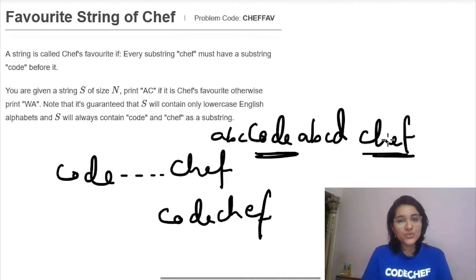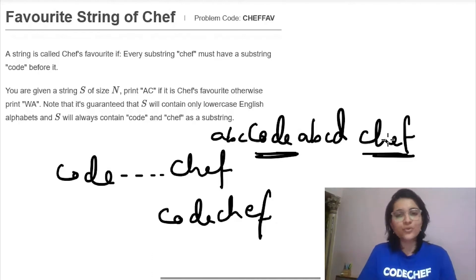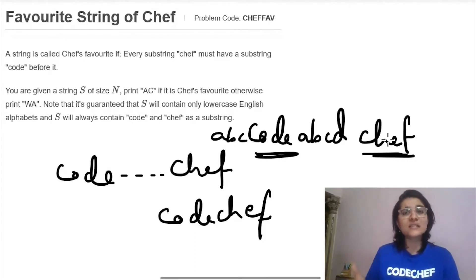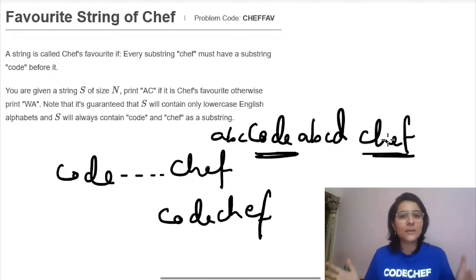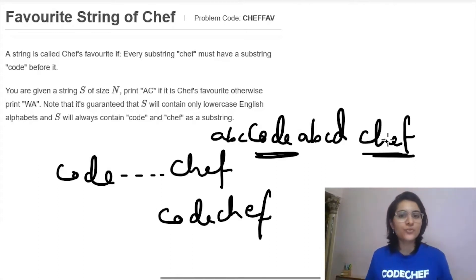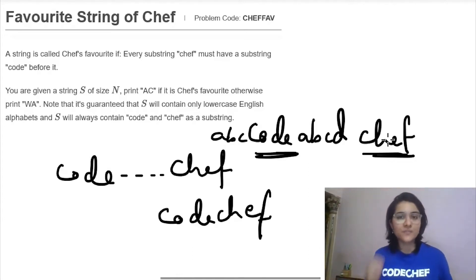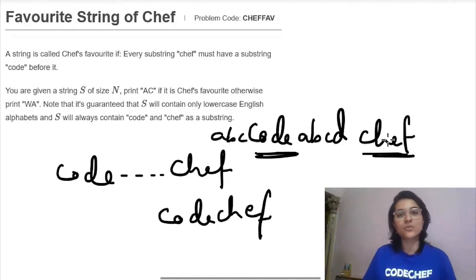We will be using simple brute force. We could have used the KMP algorithm, but we are not necessarily finding all appearances of 'chef' or all appearances of 'code', so we are just going to use brute force. The solution will still be O(n) complexity, where n is the size of the string.